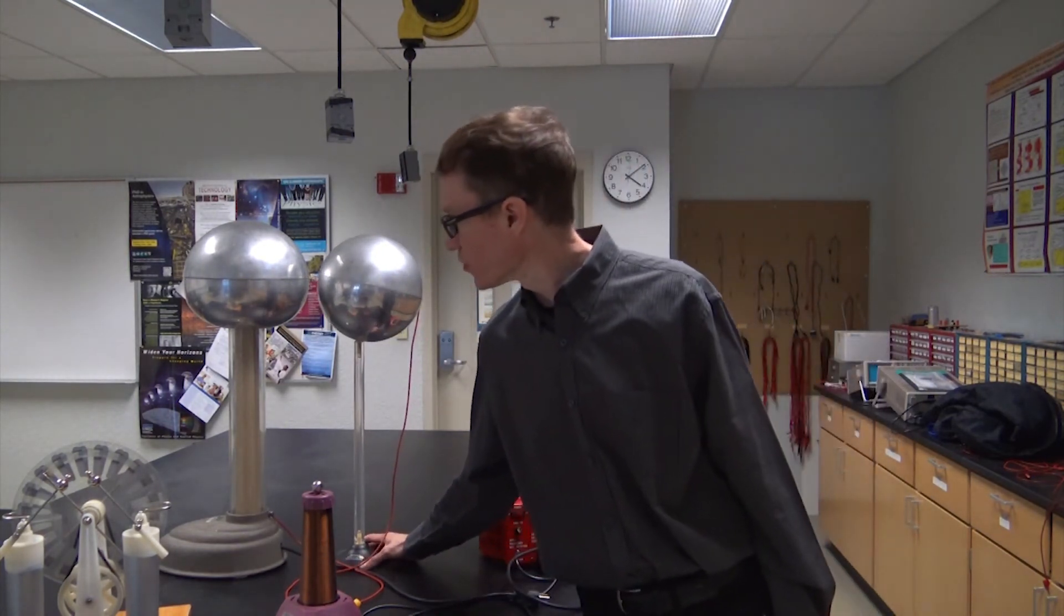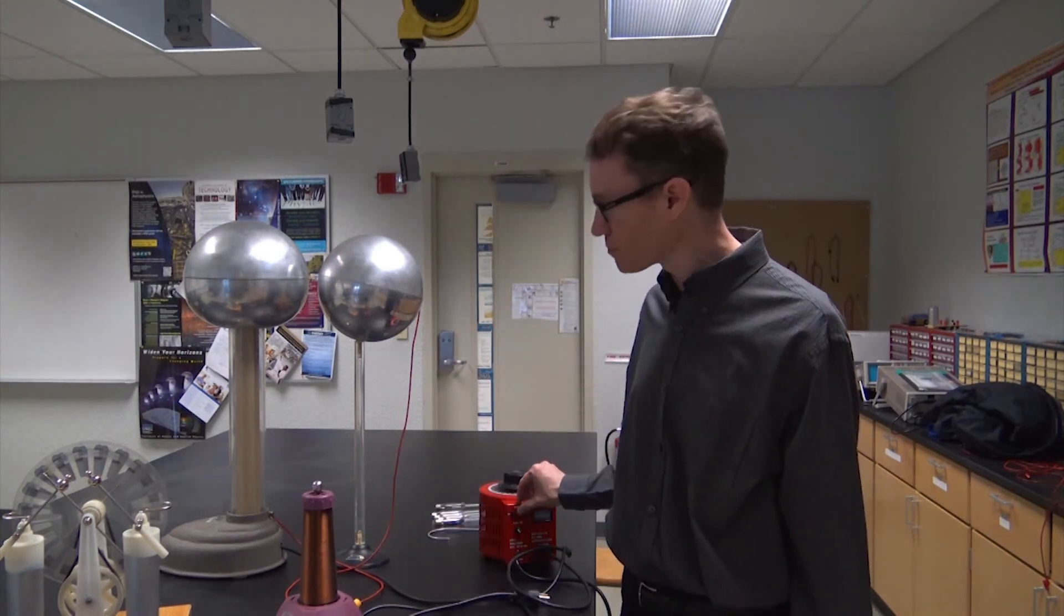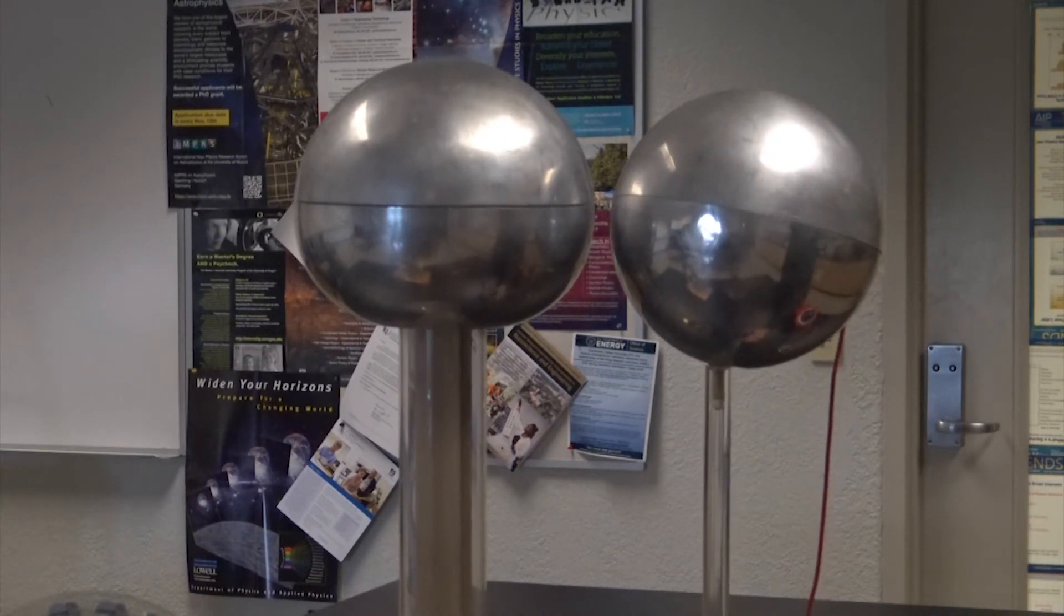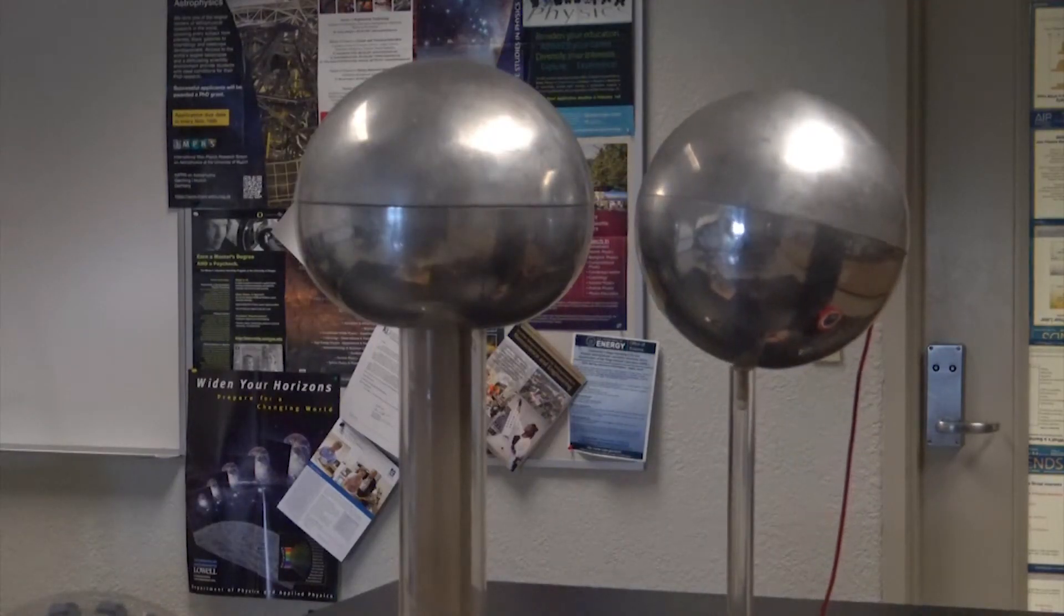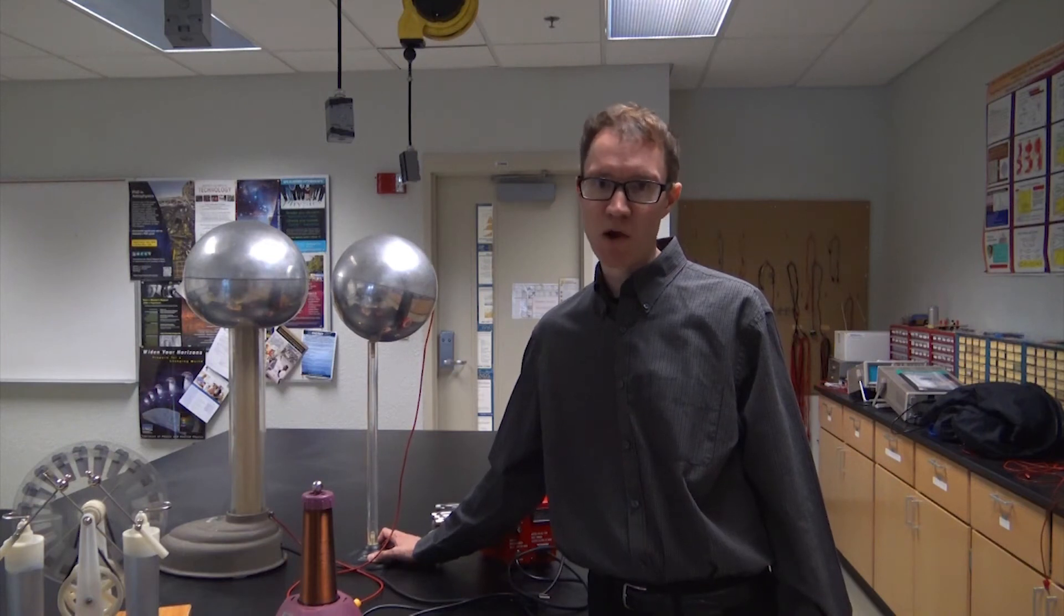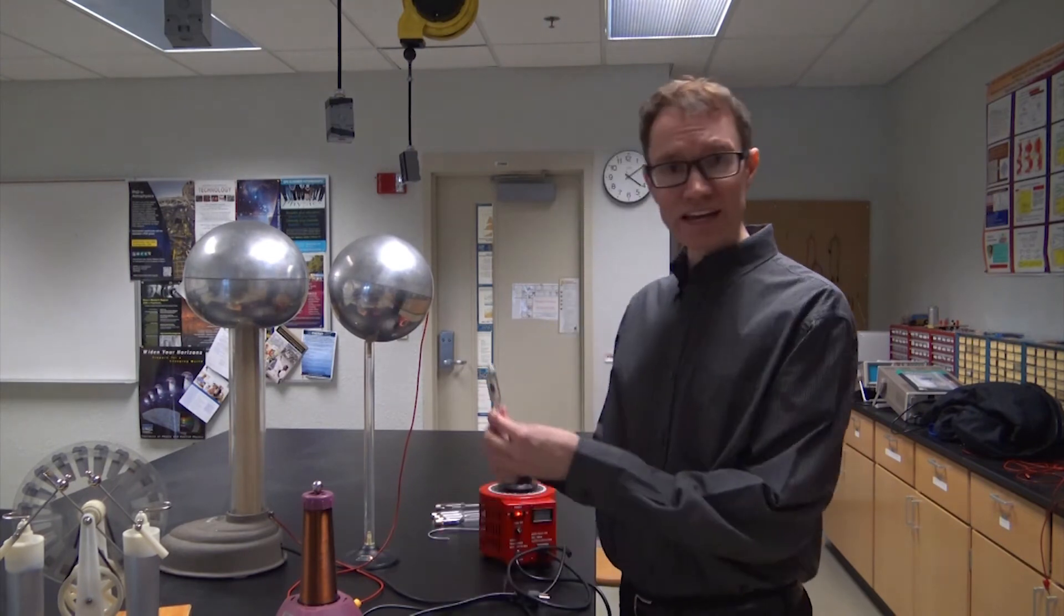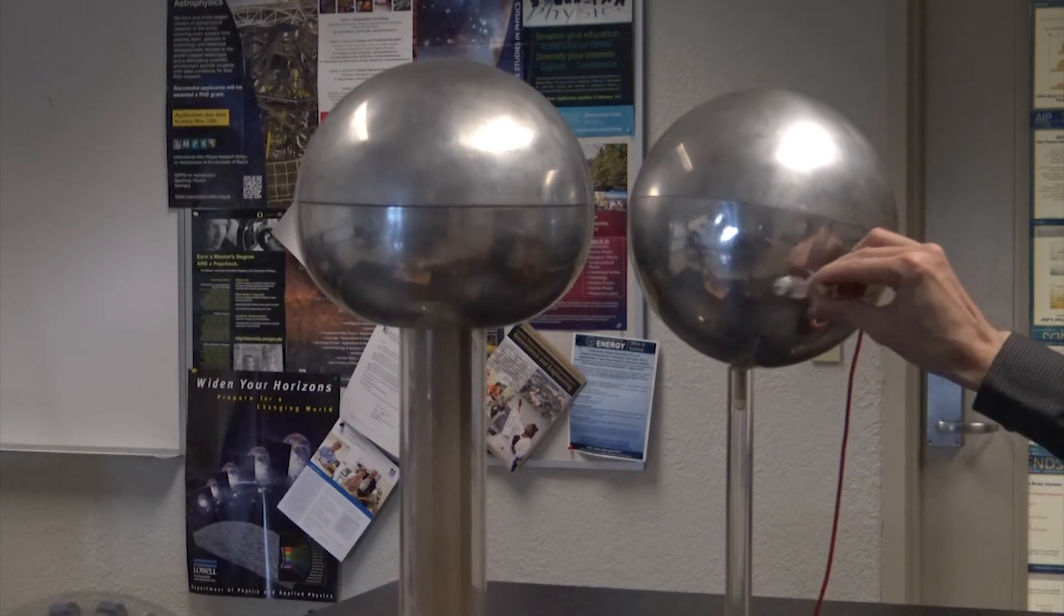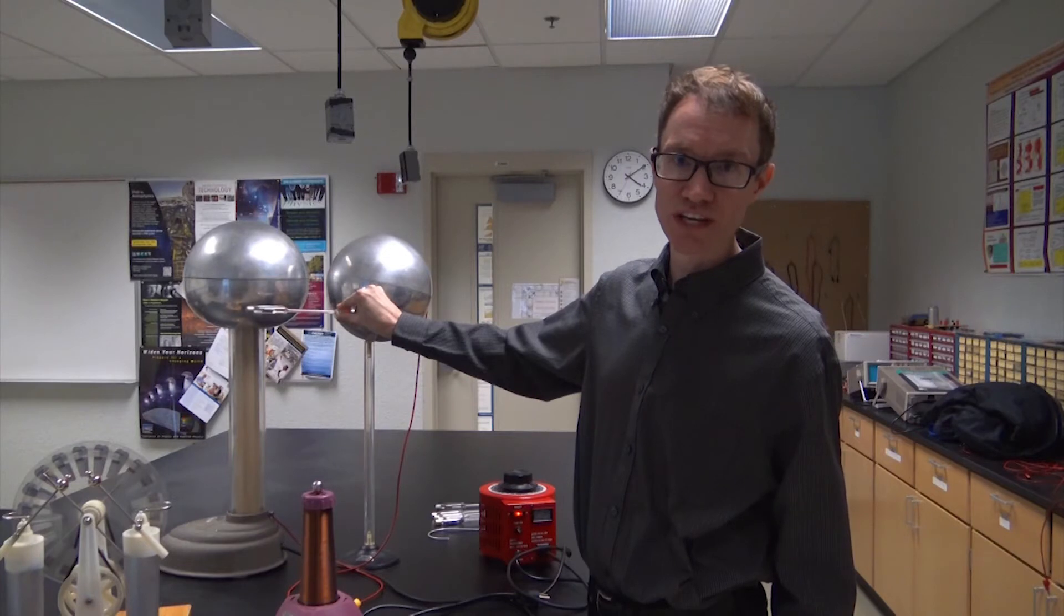So if I pull the electrodes further apart, the sparks should occur a little bit less often because it takes more time to build up that voltage. So we're getting sparks, and as I pull it apart, we're getting fewer but longer sparks. I've got a neon tube here with electrodes on the two ends. I can also get discharge through the neon tube.